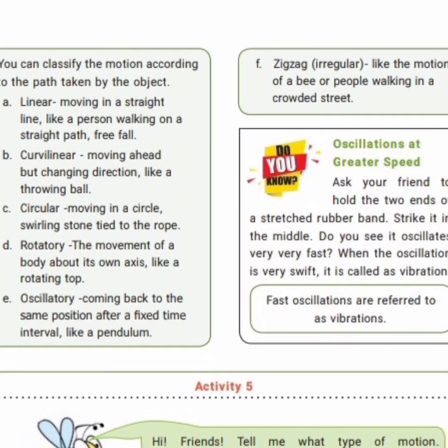So motion types include: linear, curvilinear, circular, rotatory, oscillatory, and zigzag. Linear motion is movement only in a straight line — for example, a person walking on a straight path. Curvilinear motion is moving forward but changing direction, like throwing a ball. Circular motion is moving in a circular path, like swinging a stone tied to a rope.